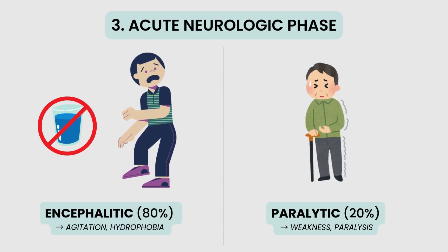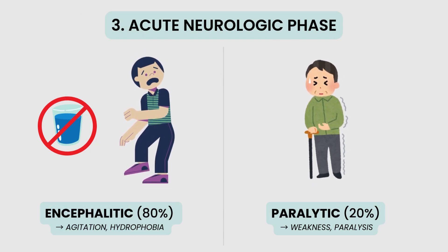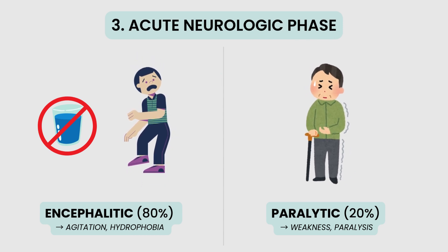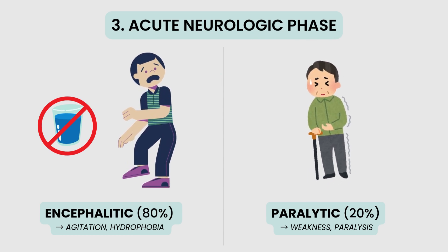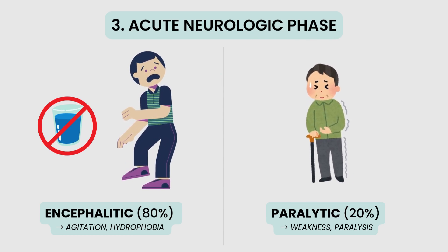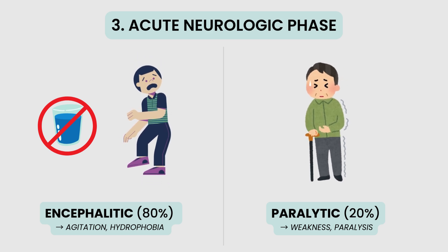Once the acute neurologic phase begins, symptoms become severe. In about 80% of cases, the encephalitic form develops, marked by anxiety, agitation, hallucinations, and hydrophobia caused by painful throat spasms that make swallowing water nearly impossible.